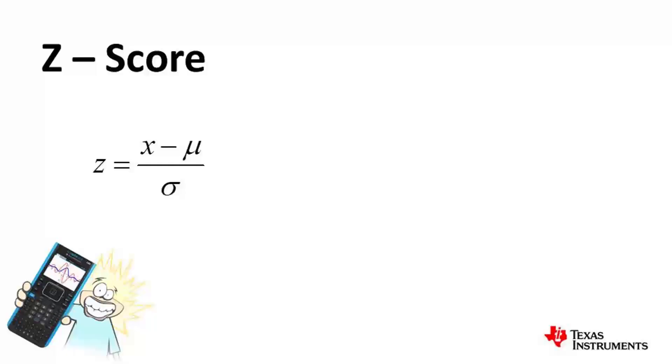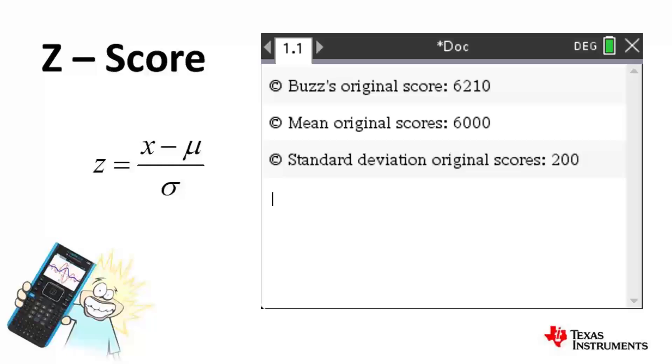Once we have the standard deviation, we can see how their distance from the average compares to the standard deviation. One of our original gamers, Buzz, had a high score of 6,210. The average score in those days was 6,000, with a standard deviation of 200. So Buzz's standardized, or Z-score, is 1.05.